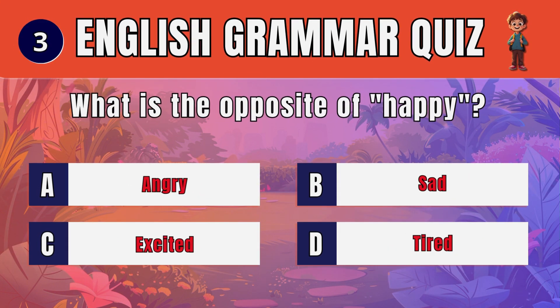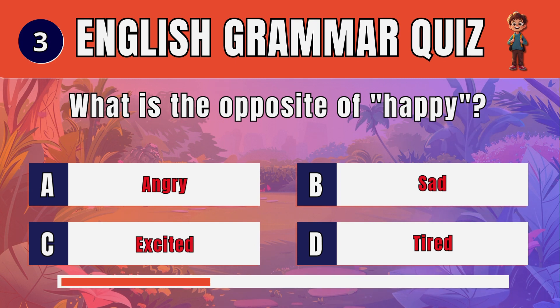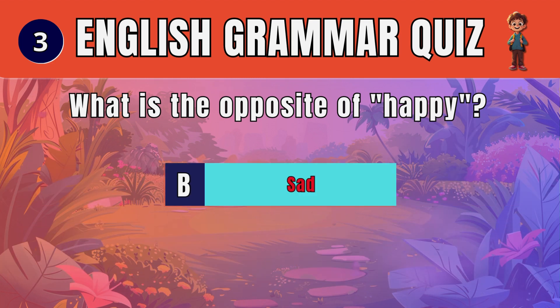Question 3. What is the opposite of happy? The answer is: D. Sad.